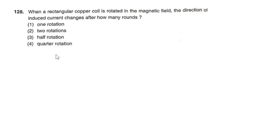Next question: When a rectangular copper coil is rotated in a magnetic field, the direction of induced current changes after how many rotations? Options: one rotation; two rotations; half rotation; quarter rotation. The correct answer is half rotation — option number 3.